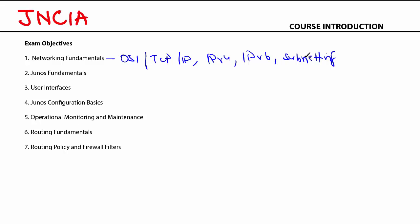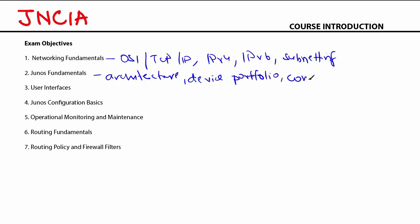After networking fundamentals, we'll dive into Junos fundamentals, where we'll talk about things like Junos architecture and the device portfolio for Junos. We'll also talk about the control plane and forwarding plane and understand the differences between these two. We'll then dive into user interfaces, where we'll discuss the command line interface and J-Web — J-Web is a web management utility for Junos.